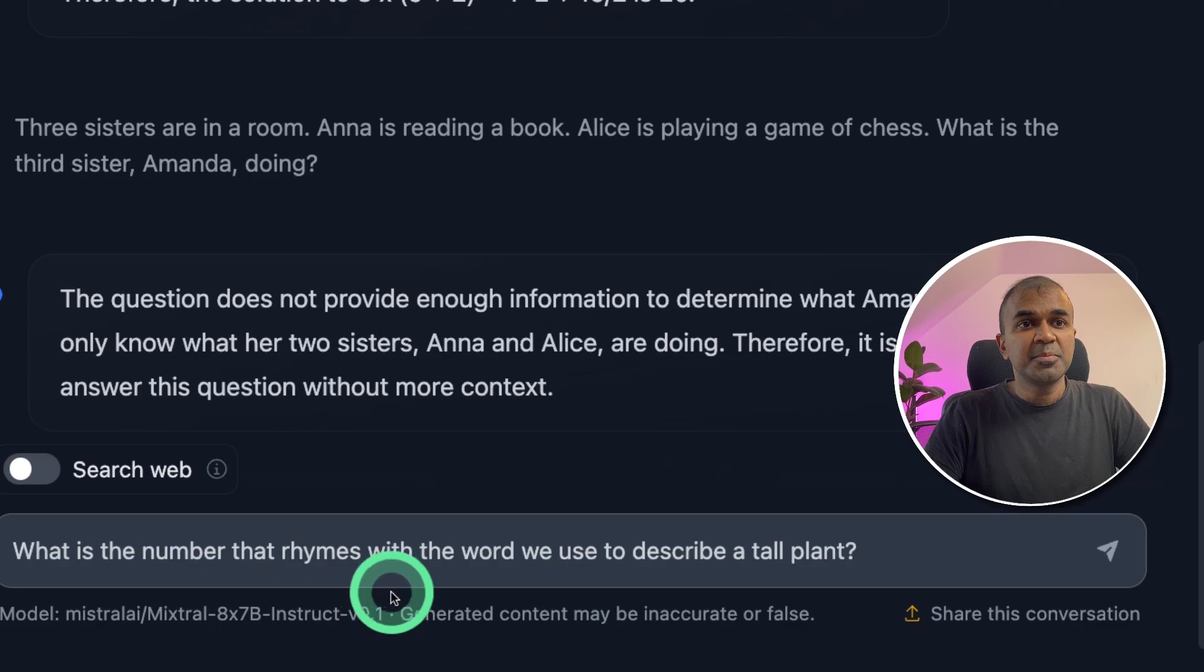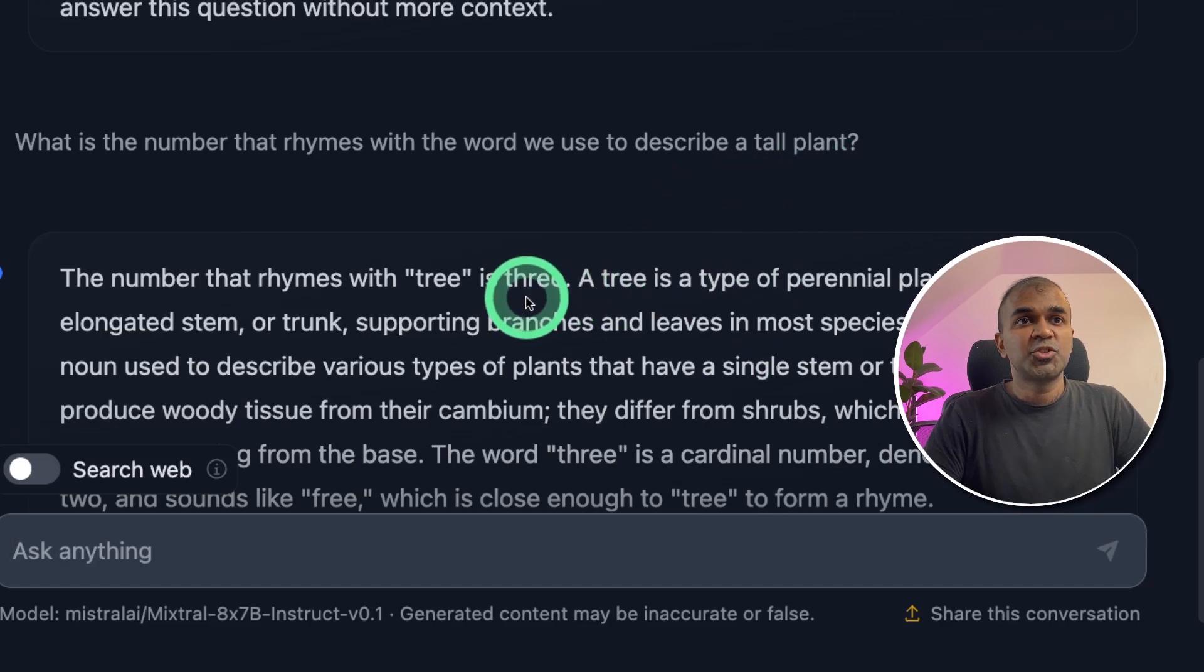Next, what is the number that rhymes with the word we use to describe a tall plant? A tall plant is called tree and the number which rhymes is three. So that is correct.